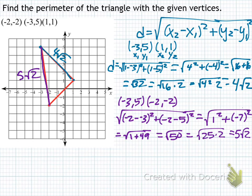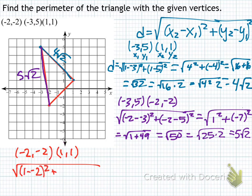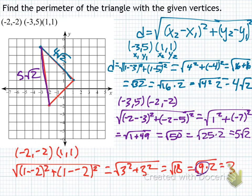Now I have two of the three sides, so I just need this last distance. Using the endpoints negative 2, negative 2 and 1, 1, I plug into the distance formula: the square root of (1 minus negative 2) squared plus (1 minus negative 2) squared. That gives 3 squared plus 3 squared, equal to the square root of 18. Rewriting as the square root of 9 times 2 — since 9 is a perfect square — gives 3 rad 2.